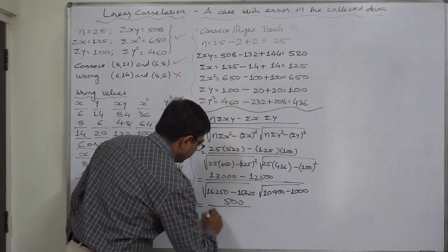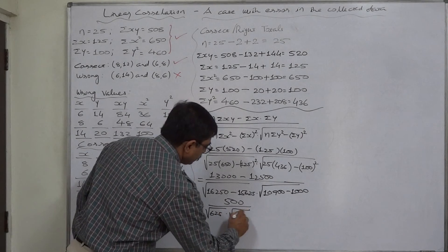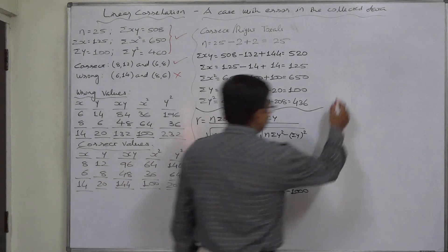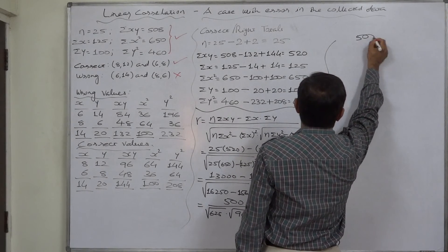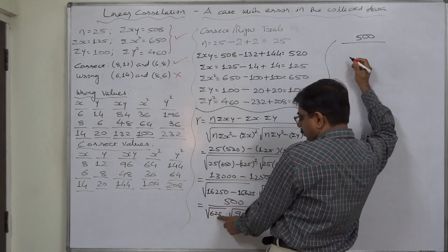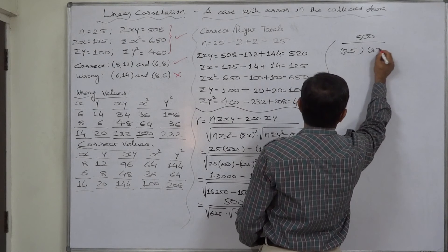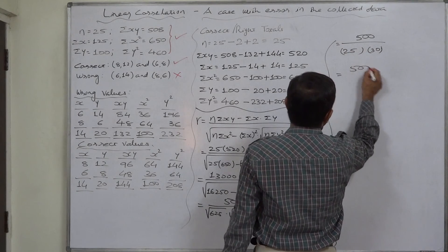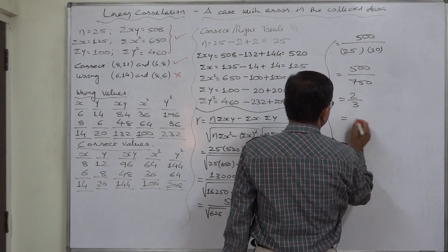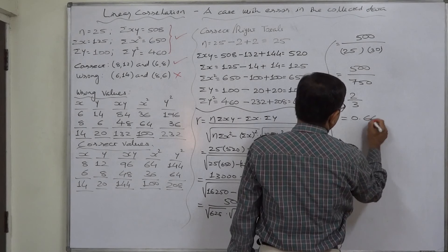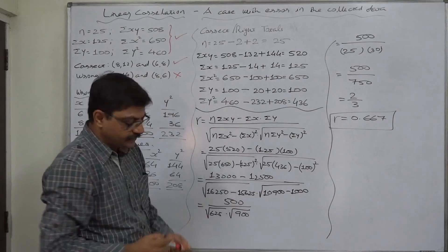So it is something like this. 500 upon under root 625 into under root 900. So it is ultimately 500 upon square root of 625 is 25 and square root of 900 is 30. So it is ultimately 500 upon 750 or 2/3 or approximately 0.667.